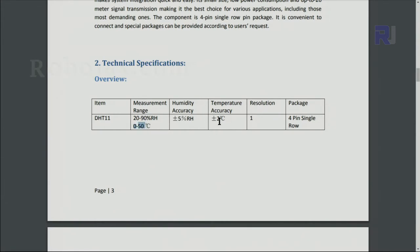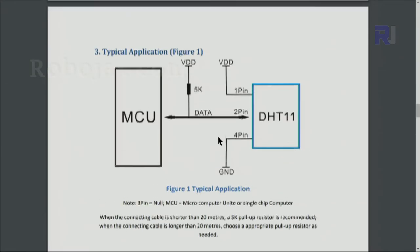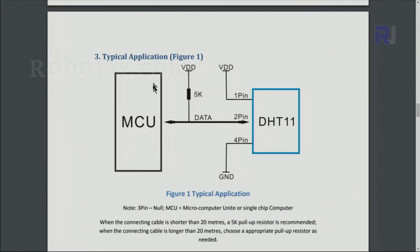Here is the wiring diagram from the datasheet. This is a microcontroller unit and this is the sensor. You have to connect from the left pin 1 to VDD. In our case we will connect it to 5 volts. Pin 2 is the output, but from this pin also we connect a 5 to 10 kilo-ohm pull-up resistor to 5 volts. Pin 3 is not used, pin 4 is connected to the ground.